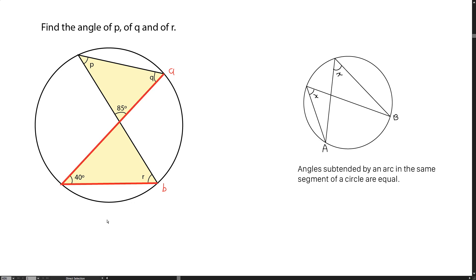Now, the same R, A, B can be subtended to P as another angle. So P is the same as 40 degrees. I'm going to label P as 40 degrees.